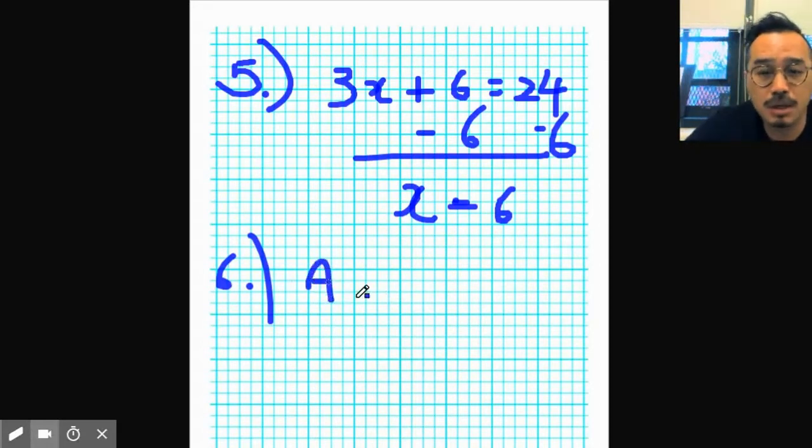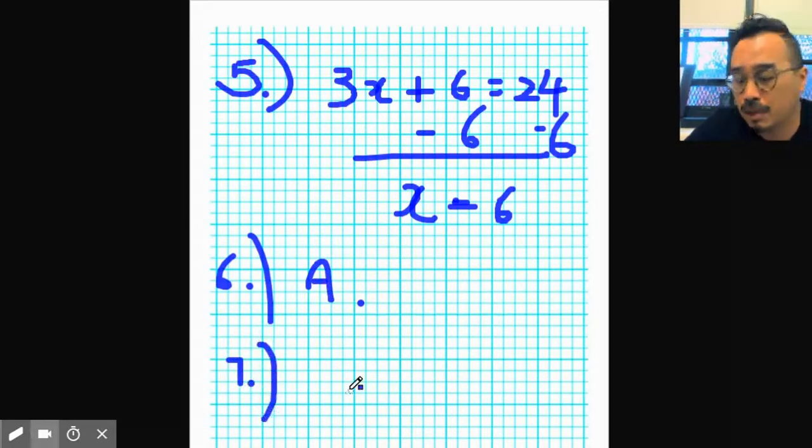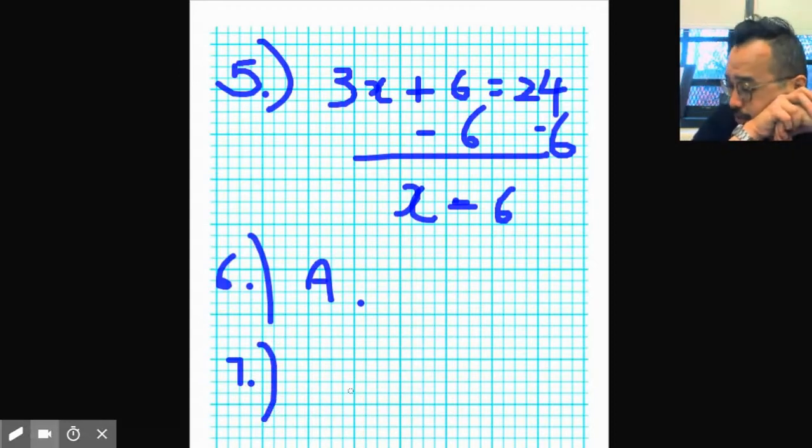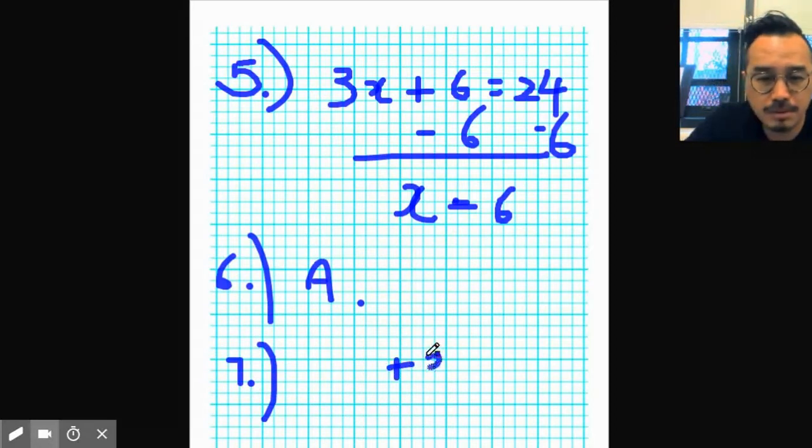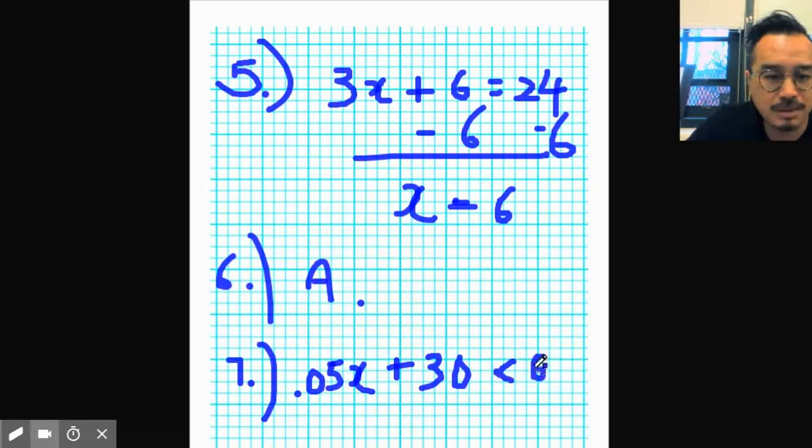Number seven. Okay, another two-step inequality water problem. So you have to pay 30 bucks a month and it's 0.05x, right, because it's five cents per tax. Now she wants it under 60 dollars a month, so it has to be less than. And then you solve for x. Use a calculator. The answer is A.